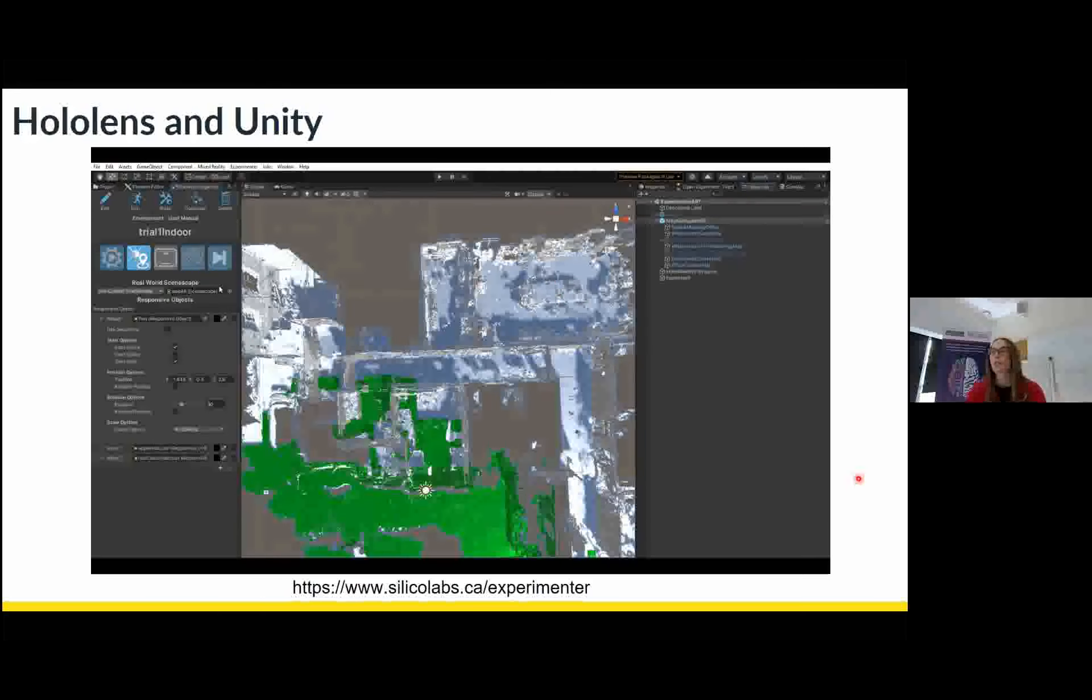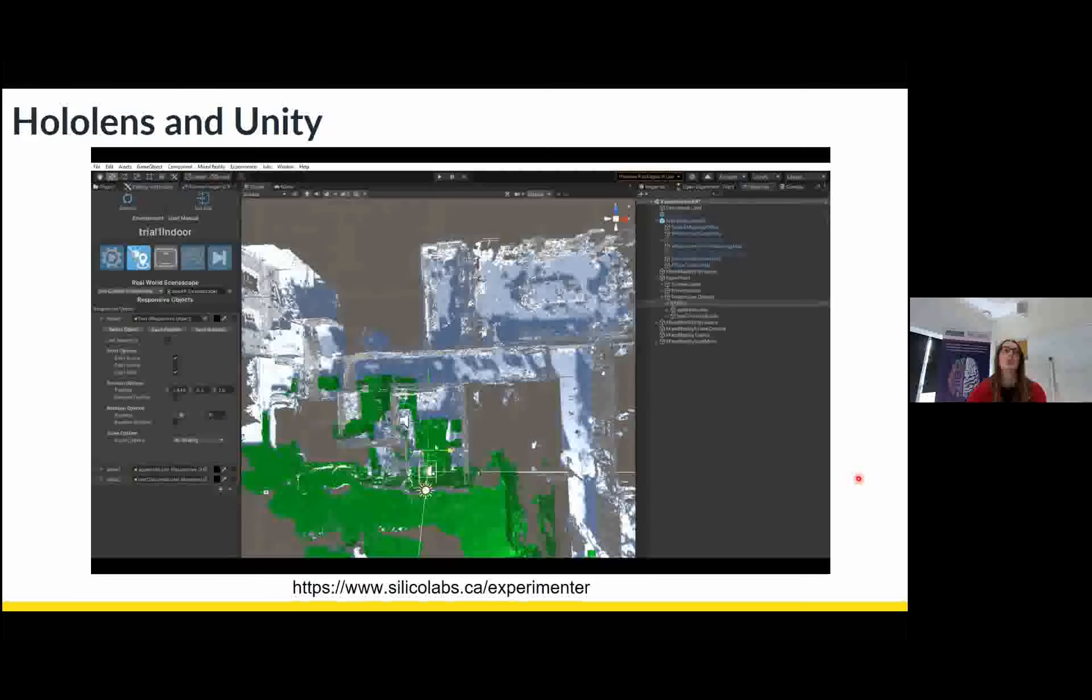And if I wanted to place an object onto that table, all I have to do is create or import an object into Unity, like this loudspeaker object here. And I just drag it onto the table in my 3D map. And then I export this application to the HoloLens and I run the application on the HoloLens and it will present that object exactly where I want it in the real world.